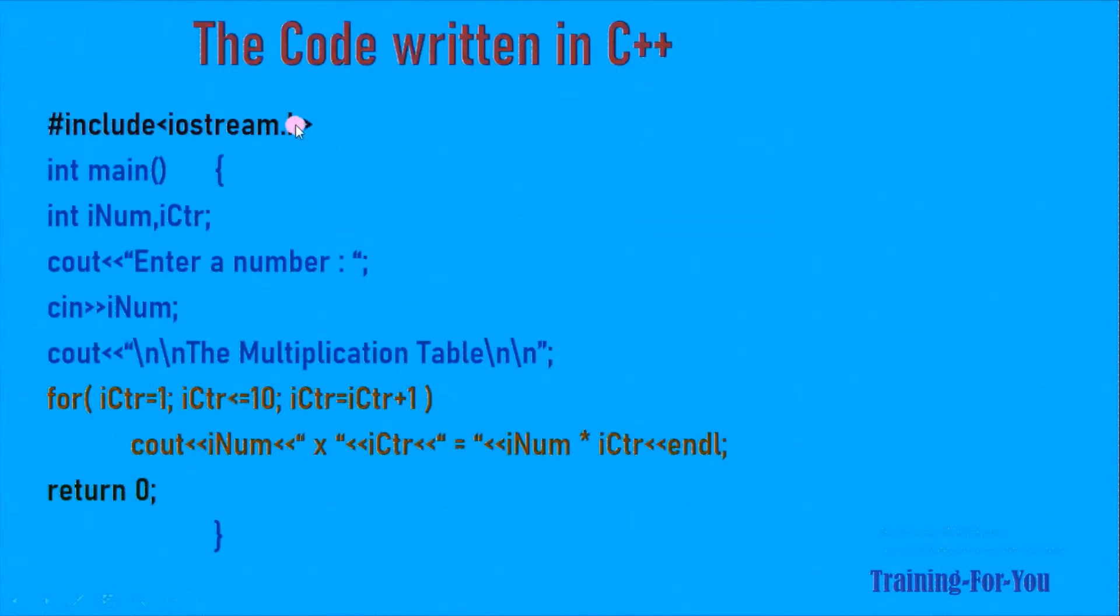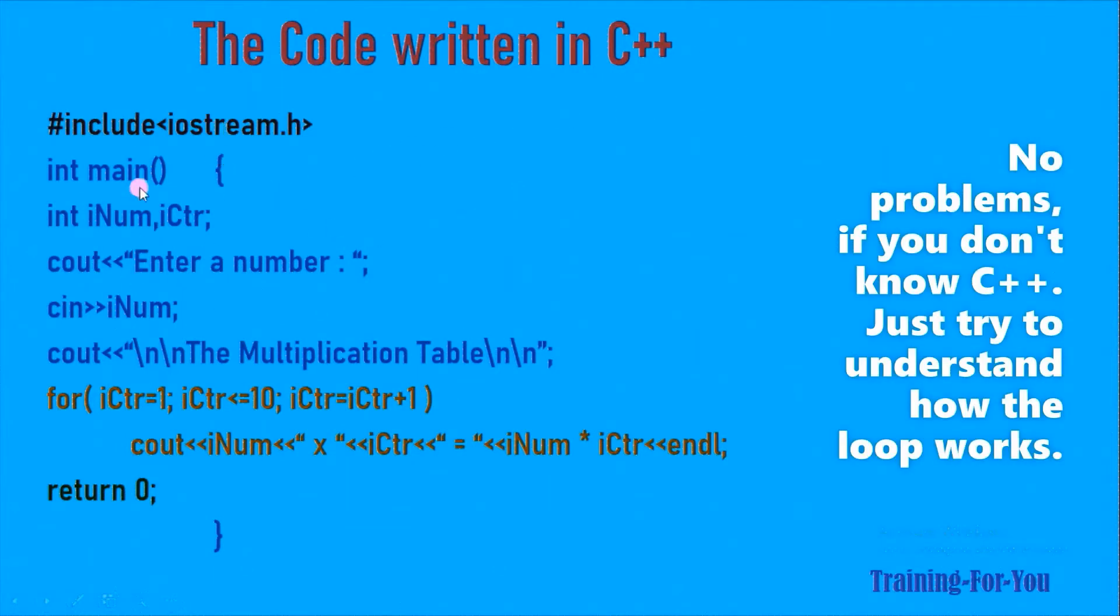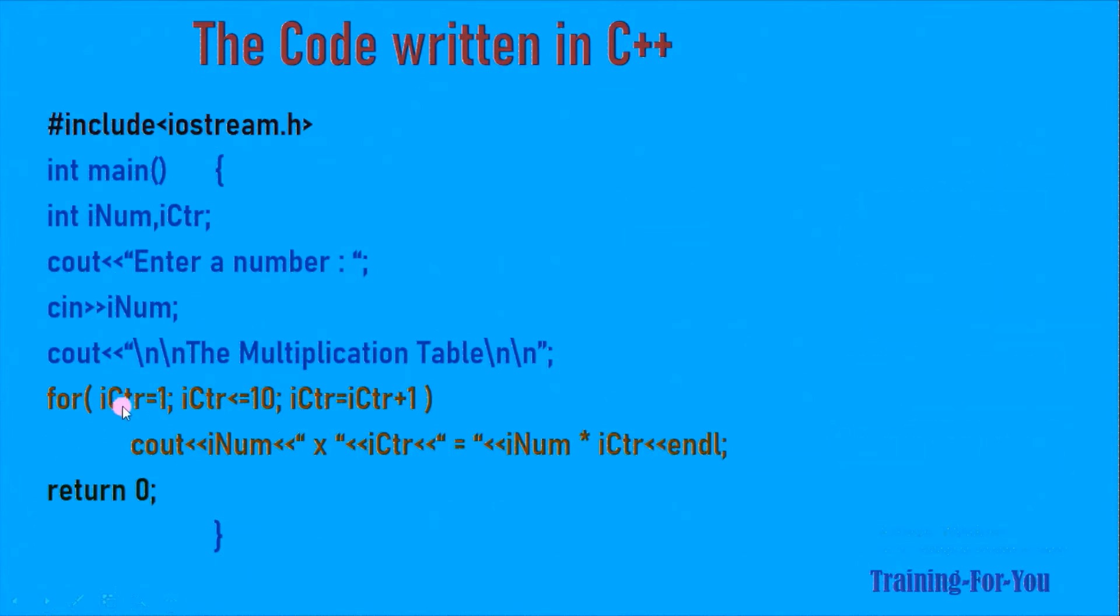Let us see the code in C++. What we have done here is we have just taken the number and this is the for loop. So we can see the initialization takes place here. This variable is given the value one and then this condition is tested.